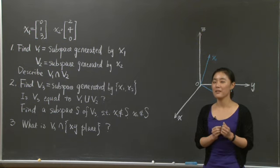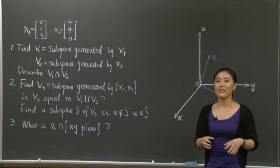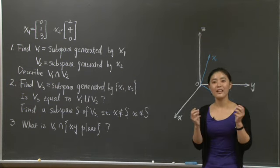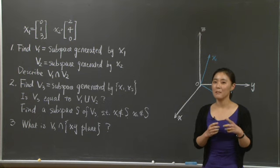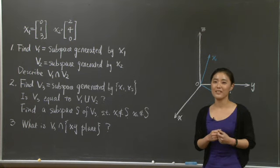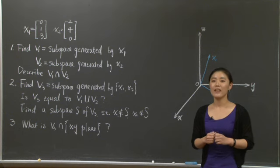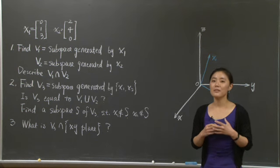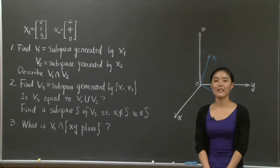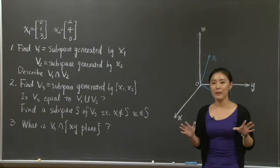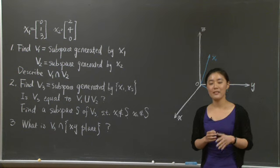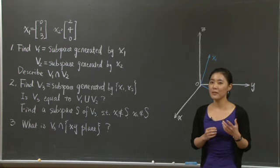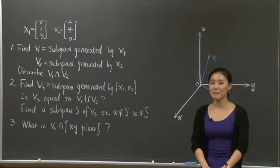So can you recall what are the conditions for a set to be a linear space? You take any two elements from that set, take the sum of them, and you want the sum to be still in the same set. That's the first condition. Second, you take any multiple of any element from that set, the result will still be in that set. And if within a linear space you can find a subset which also satisfies the two conditions, then that will give you a subspace.